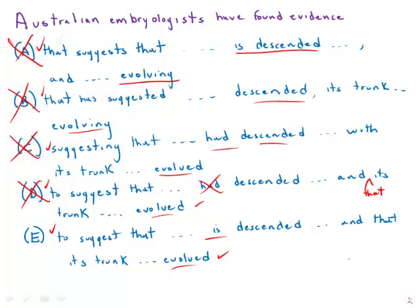E is by far the best answer choice. It has the correct parallelism, the correct verb tenses, and it is clear and direct. E is by far the best answer choice.